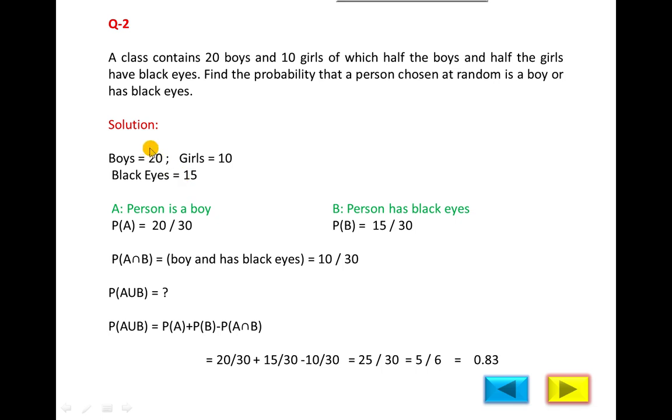So how many boys have black eyes? 50 percent, which means 10. Half of the boys have black eyes. Boy and also has black eyes means only 10 boys have black eyes. So the common is 10. The probability of boy and has black eyes intersection will be 10 upon 30. Substitute this value here and simplify; the result will be equal to 0.83.